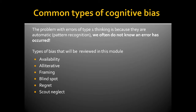The types of bias that will be reviewed in this module include availability bias, alliterative bias, framing bias, blind spot bias, regret bias, and scout neglect bias.